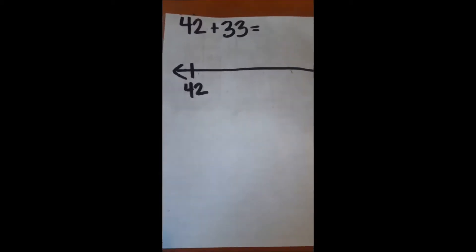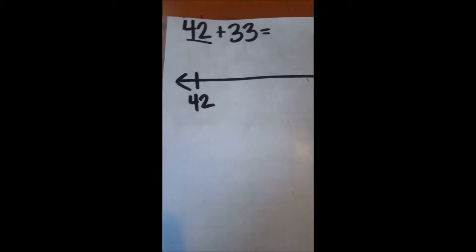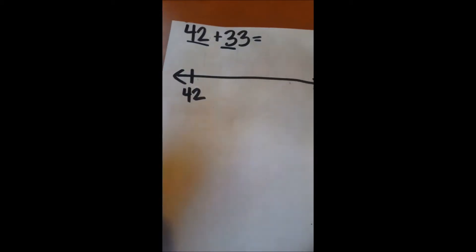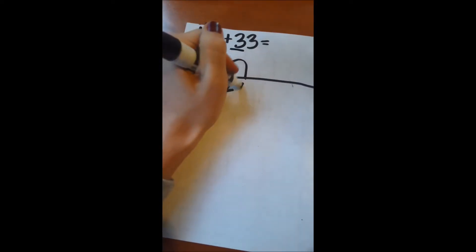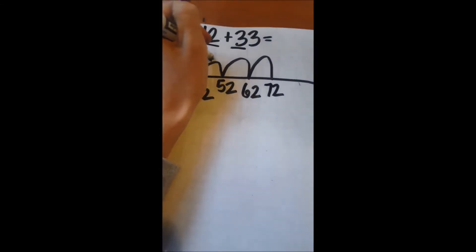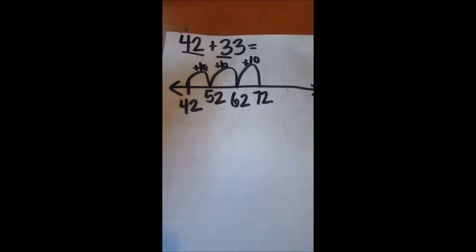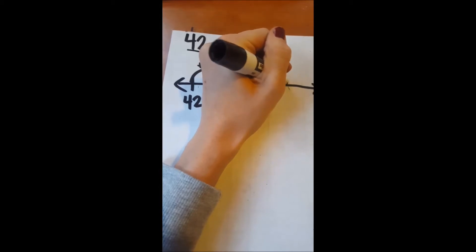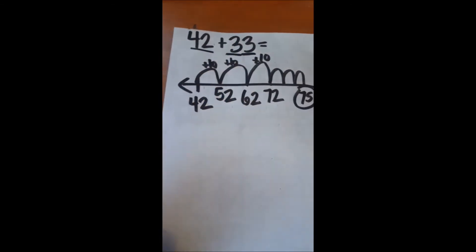We can also use this strategy for larger numbers. Just like before, we'd start with the bigger number, 42, when adding 42 plus 33. We'd start by counting on tens: 42 plus 10 is 52, plus 10 more is 62, plus 10 more is 72. That's three tens. Then we count on three ones: 72, 73, 74, 75. So we're able to do 42 plus 33 by counting on.